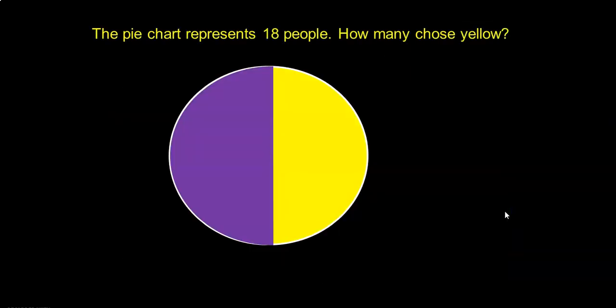The pie chart represents 18 people. The question is how many chose yellow? If you look at this pie chart the whole of the data is divided into two parts, purple and yellow. If the whole is 18 then the yellow is obviously half of 18 which is 9.